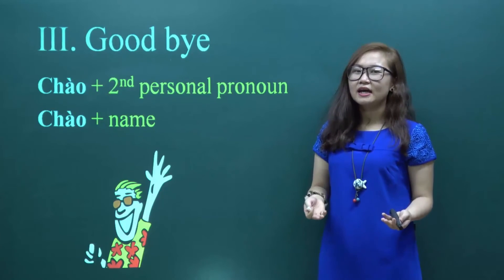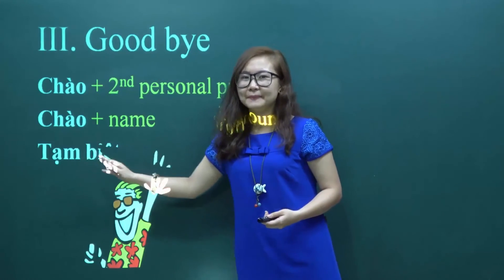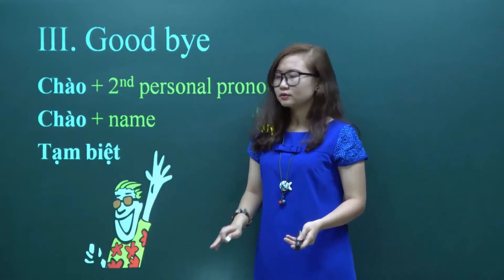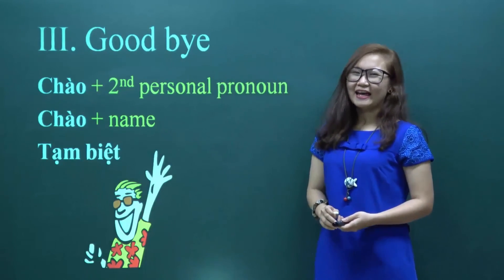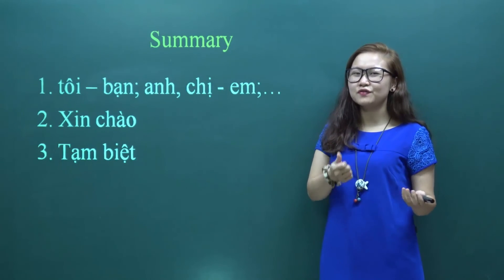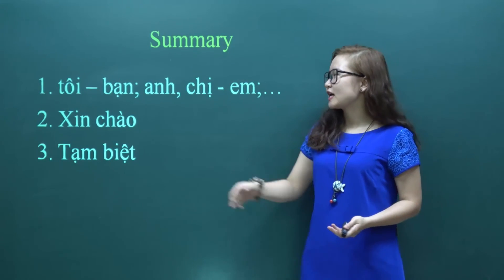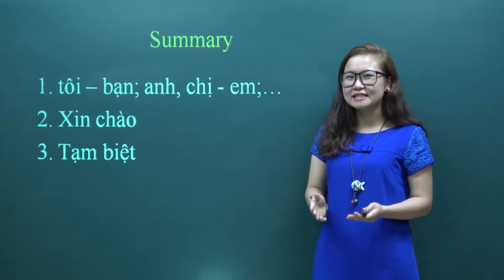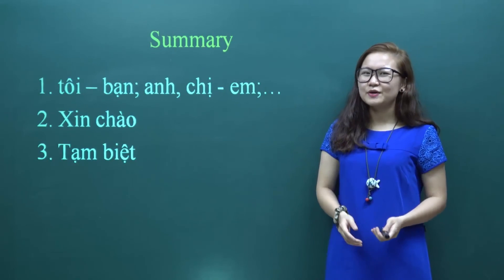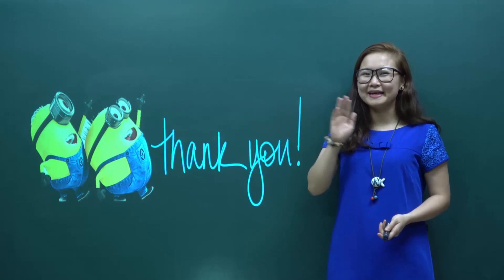The two structures — 'chào' plus a second personal pronoun, and 'chào' with a name — can also be used to say goodbye. And another way to say goodbye is 'Tạm biệt.' Tạm biệt means goodbye, and remember that both words in tạm biệt are low tone. So we have just finished all three parts of our lesson today: Vietnamese basic personal pronouns, how to say hello in Vietnamese, and how to say goodbye. Don't worry if it seems complicated — practice makes perfect. If you have any comments or questions, please feel free to put them in the comment section below. Tạm biệt! Goodbye! Bye.